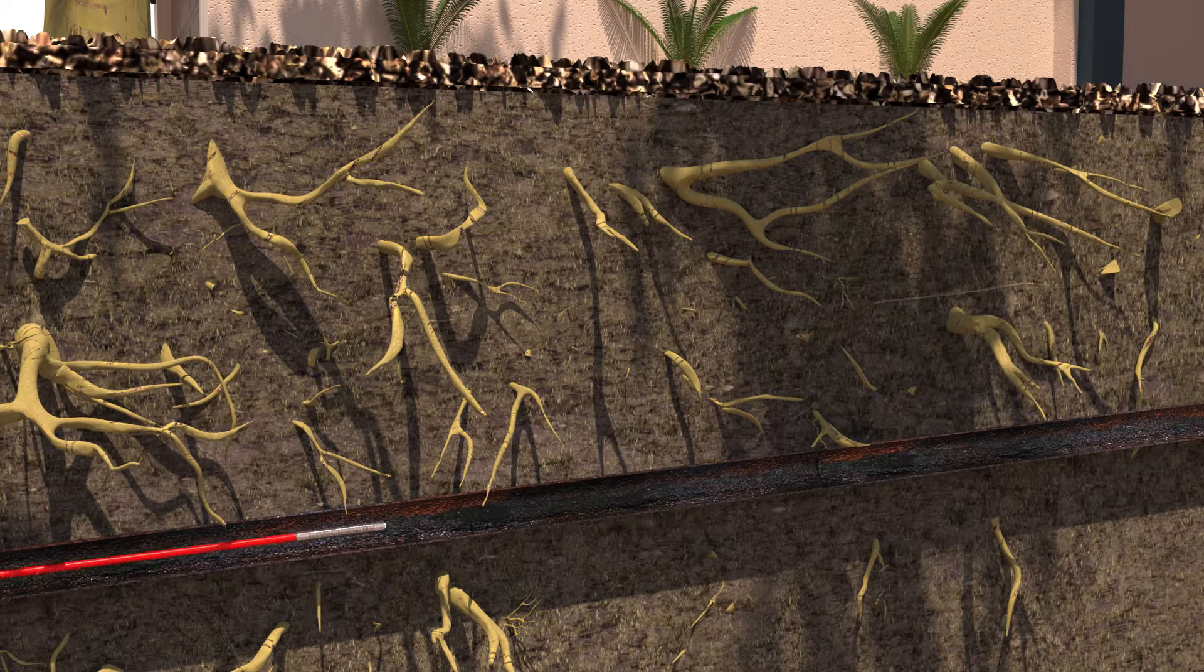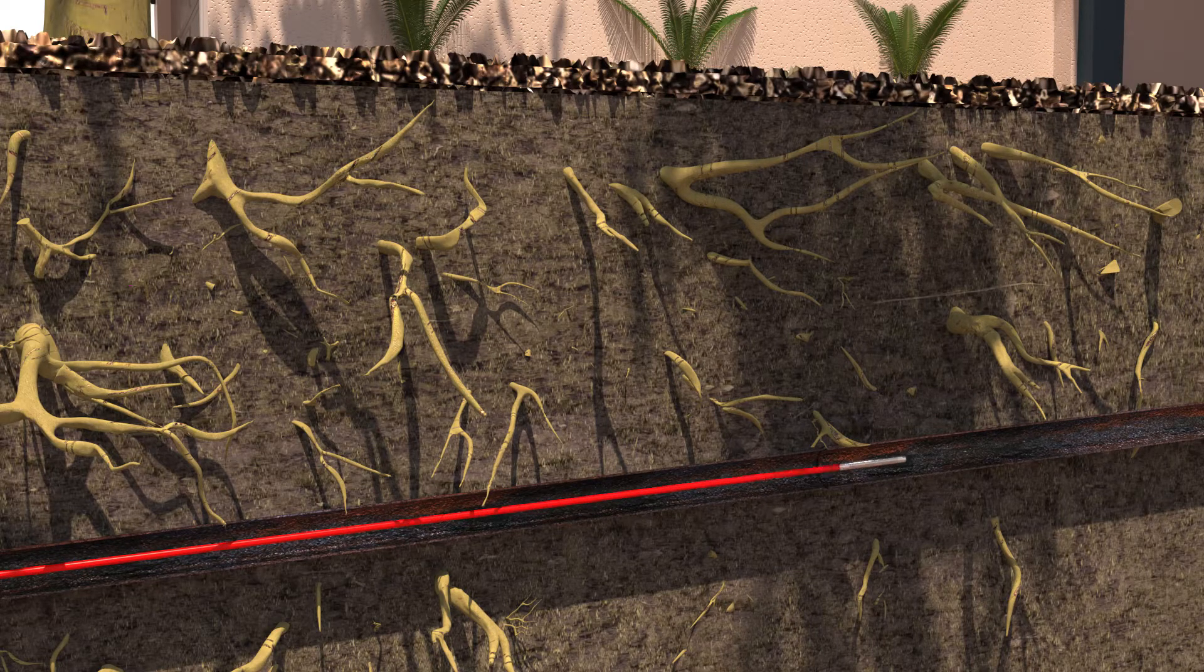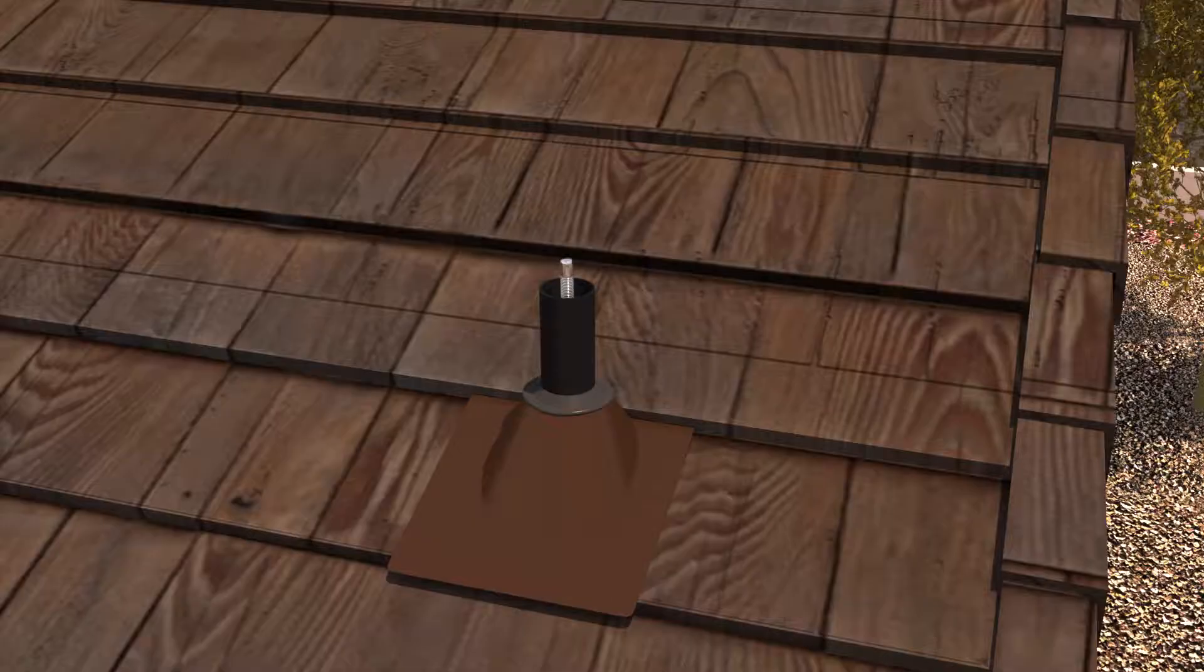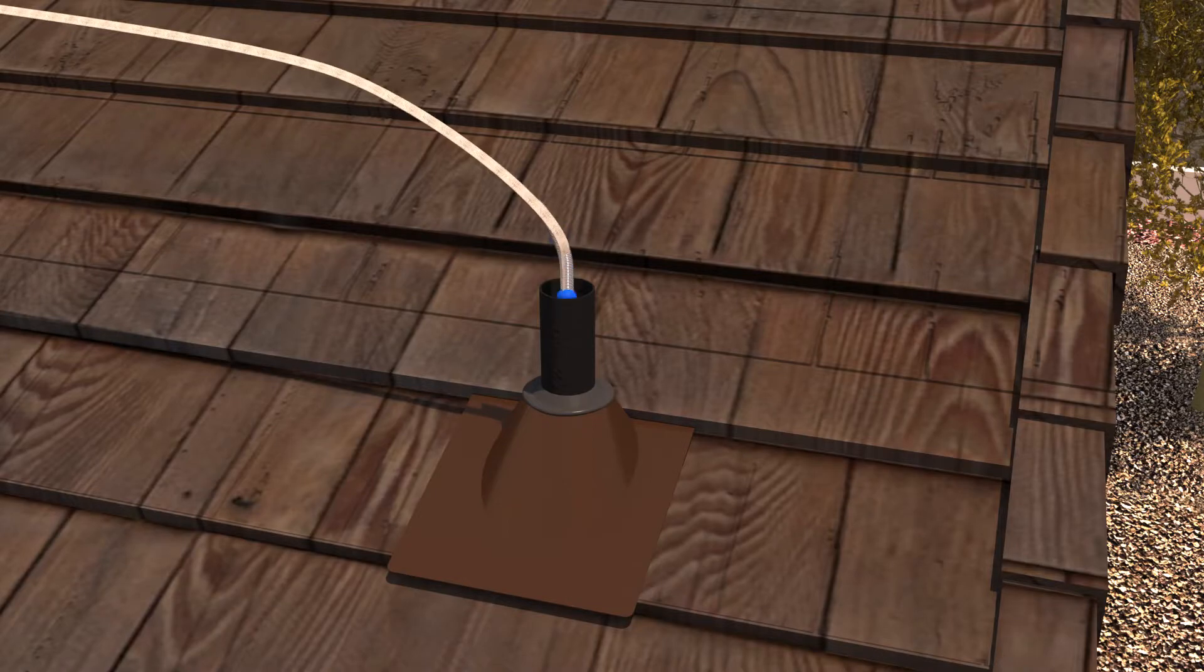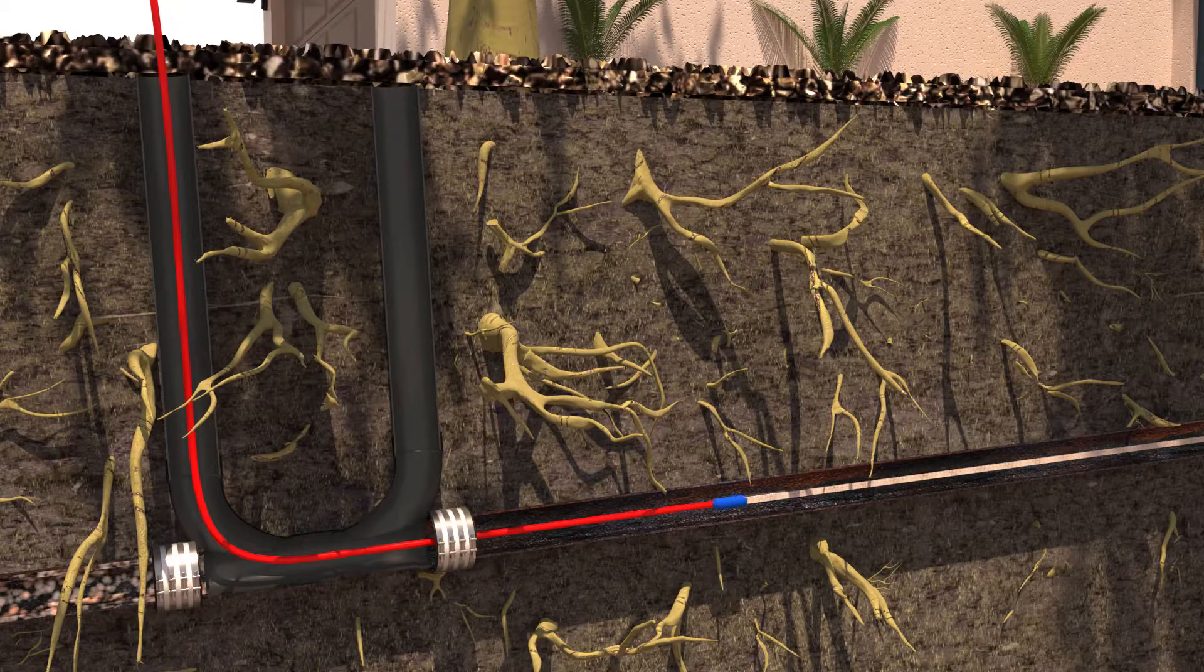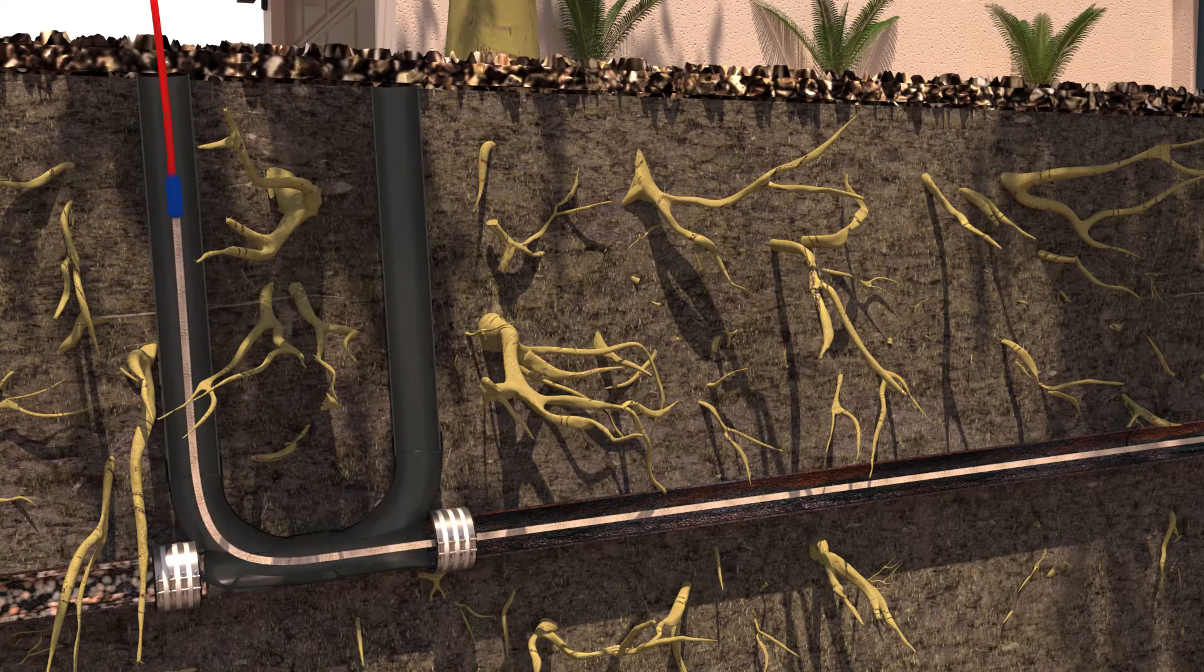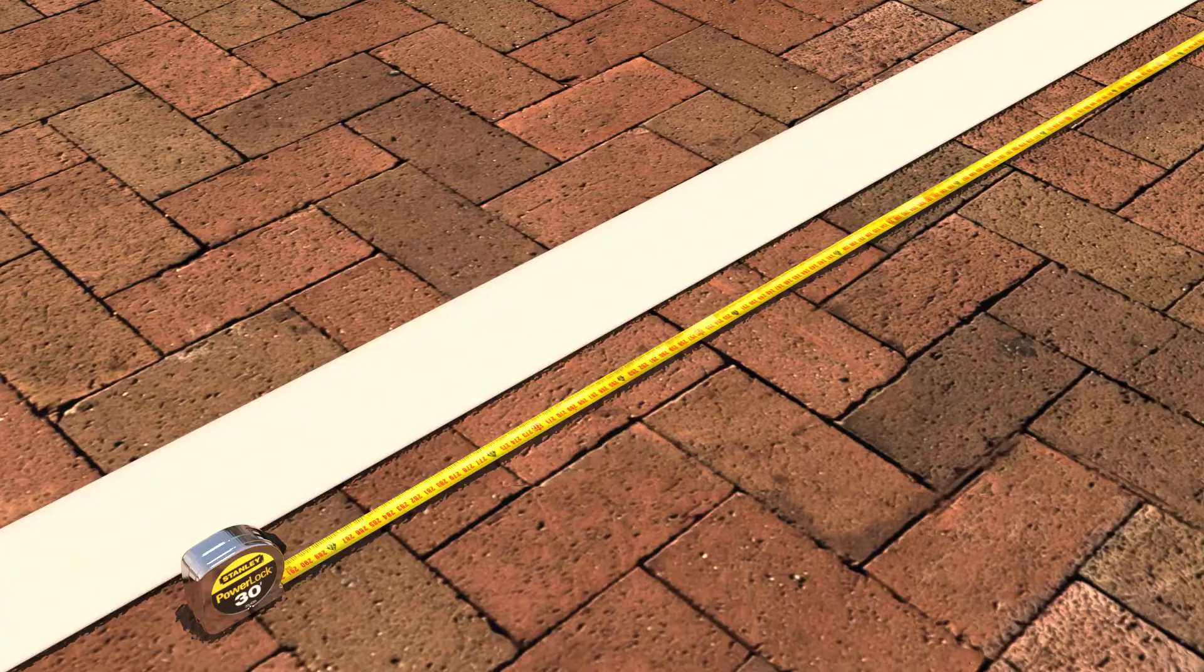We then re-video the pipe for assurance and to determine the required length of the liner. As the camera is retrieved, a pull line later used to pull the liner into the pipe is pulled back with it. The sewer is now ready to be lined.